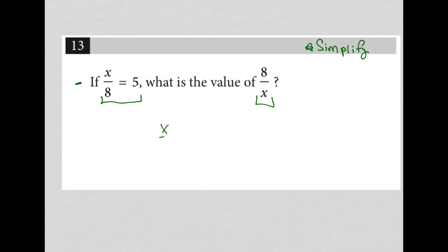The way my mind sees it is x over 8 equals 5. Well, 8 over x is just the reciprocal of x over 8, which means the answer should be the reciprocal of 5, let's call it over 1, and therefore the answer should be 1 fifth. That is your answer.